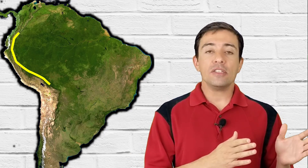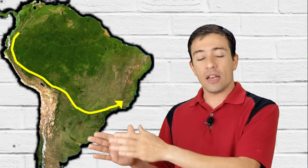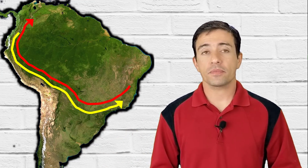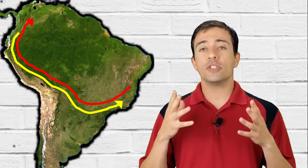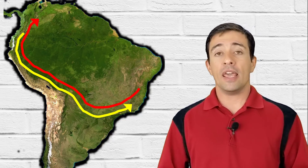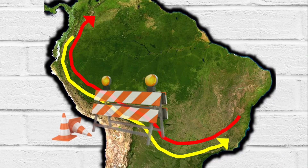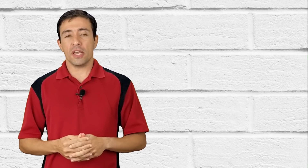As speculated by many scientists, our model shows that every once in a while, the changing climate of South America opens a climatic bridge for the Andes species to disperse to the Atlantic rainforest, and vice versa. This explains why these two regions share so many closely related species of birds and plants. Each time this climatic bridge closes again, the isolated species take their own evolutionary paths, on the way to becoming new and independent species.